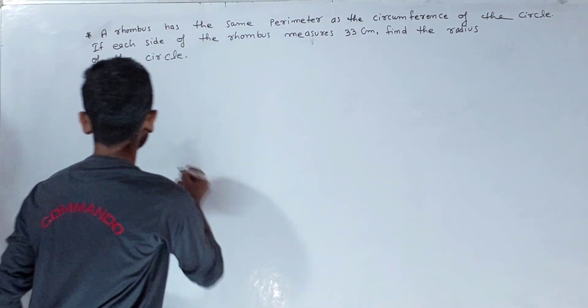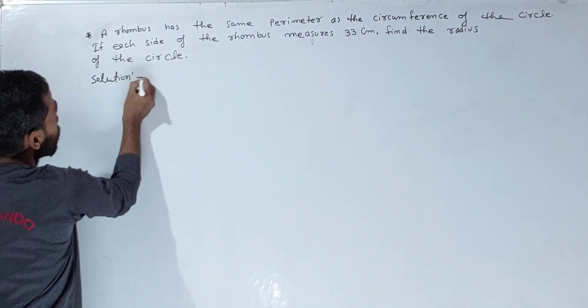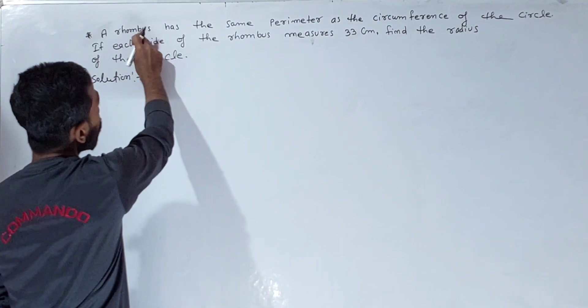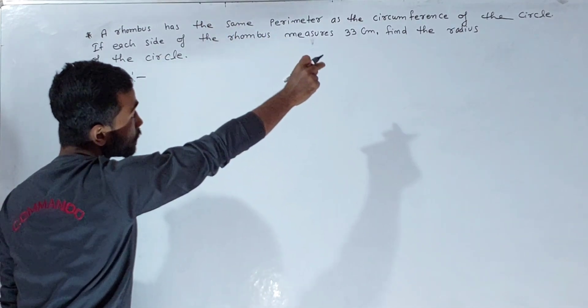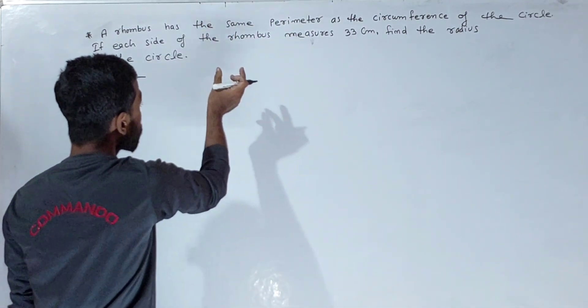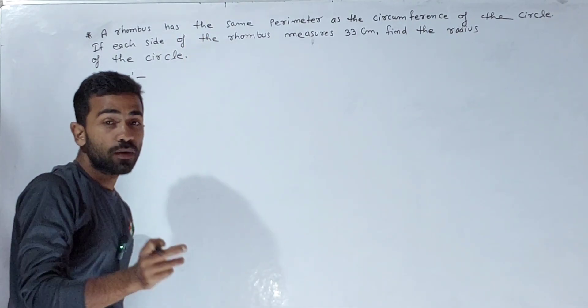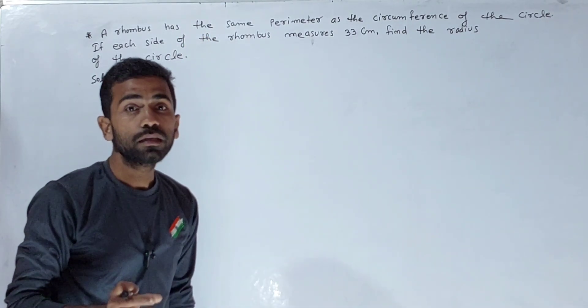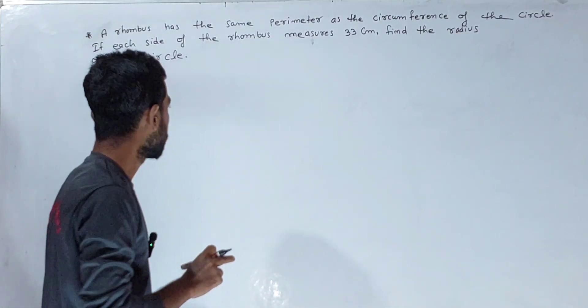So first, we write the solution. The rhombus has the same perimeter as the circumference of the circle. This means the perimeter of the rhombus equals the circumference of the circle.